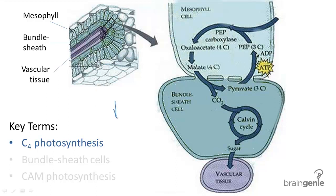To compensate for this decreased level of CO2, the C4 pathway has an extra cycle before the Calvin cycle that first converts CO2 into a 4-carbon organic acid — this is where C4 gets its name. The enzyme used to convert CO2 into a 4-carbon compound has a much greater affinity for CO2 than the enzyme that would start the Calvin cycle. So despite lower CO2 levels entering the plant, just as much CO2 is still being captured.